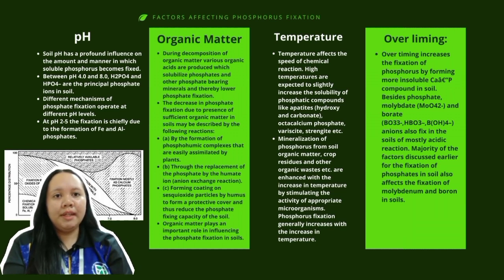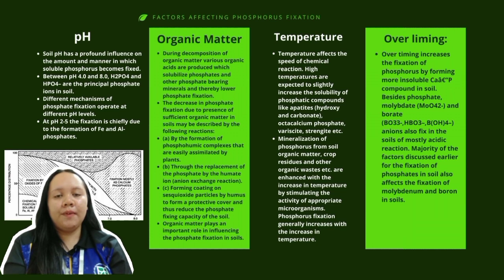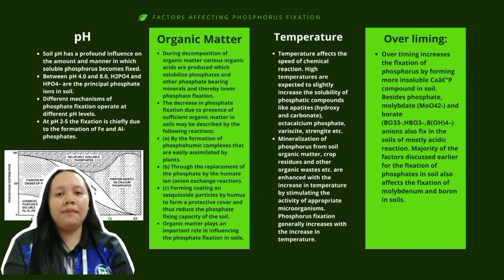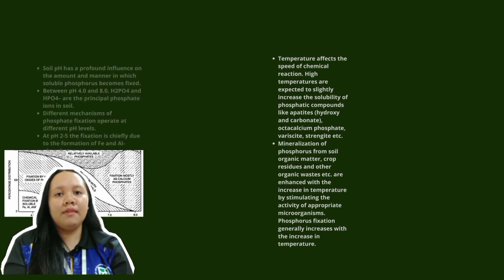Over-liming increases the fixation of phosphorus by forming more insoluble phosphorus compounds in soil. Besides phosphate, molybdate and borate are also fixed in soils of mostly acidic reaction. The majority of the factors discussed for the fixation of phosphate in soil also affect the fixation of molybdenum and boron in soil.